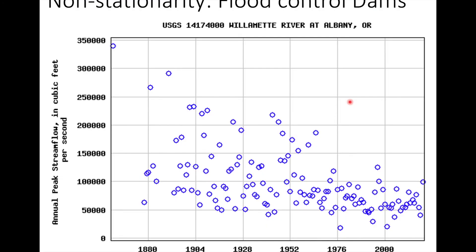There are other things that can cause non-stationarity — things changing over time. One example is the Willamette River at Albany, where dams were added to the watershed in the 1960s. Since then, we've had much smaller floods. If we wanted to do a flood frequency analysis for the Willamette River, we would not want to go all the way back to 1862, because the river operates fundamentally differently now than it did prior to the 1960s. We could do a flood frequency analysis for the period up to the 1960s, but for today, we'd want to look at the past 50 or so years of flows, or build a more complicated model that accounts for how the flood control dams operate within the watershed.